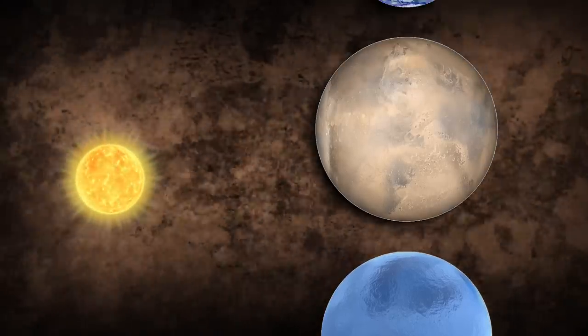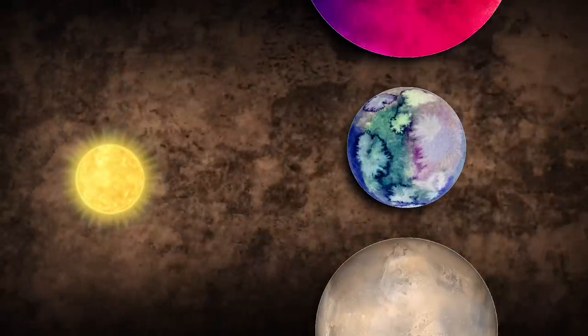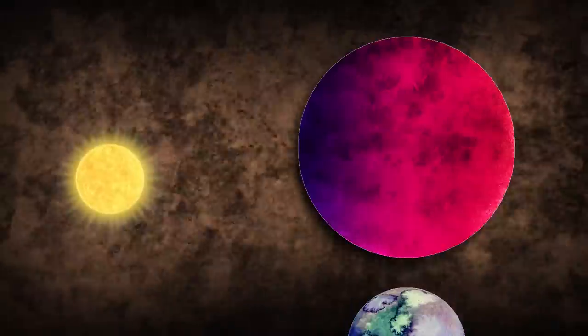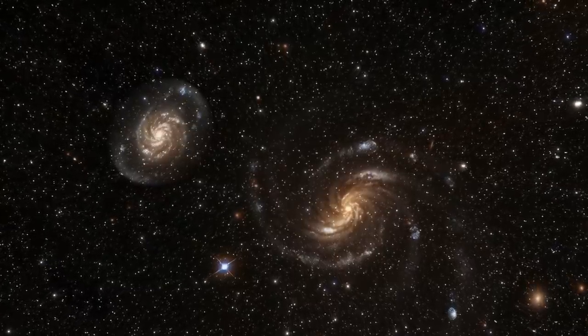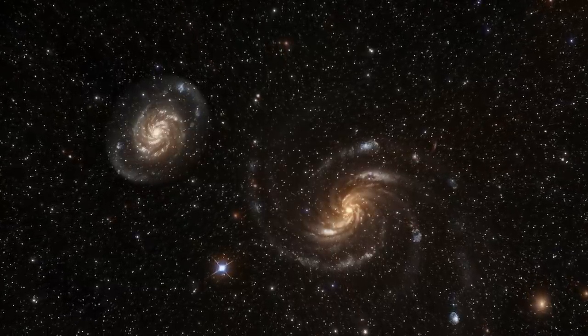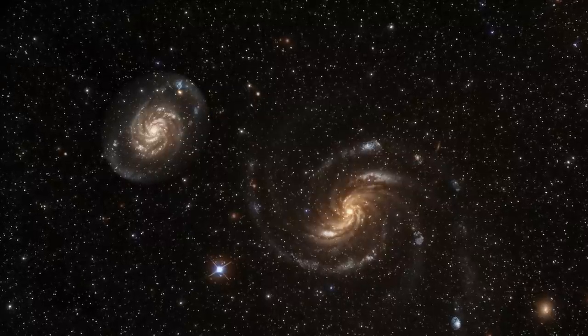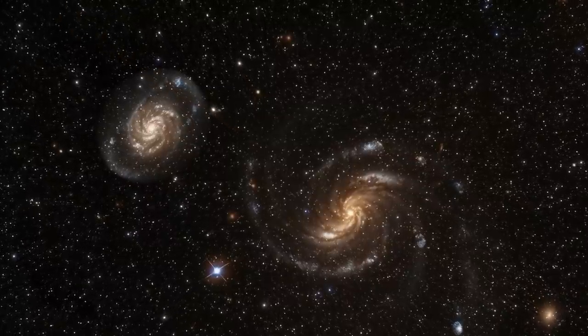In fact, 55 Cancri proudly claims the distinction of having more giant planets than our own Sun. This discrepancy in planet sizes highlights the diverse possibilities that exist beyond our solar system. The arrangement of the planetary systems is yet another contrasting feature.